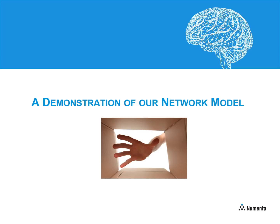As described in the paper, this video will illustrate our model, which introduces the theory of location information, and shows how cortical columns can use location information to form robust predictive models of objects. To do this, we will look at the question of how a human recognizes objects just through touch, such as reaching into a box with an object and identifying it. We will simulate a hand, and assume that information from each finger goes into distinct cortical columns.